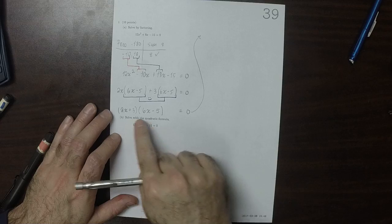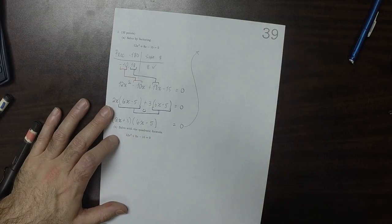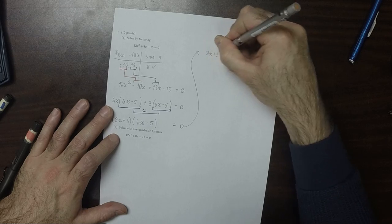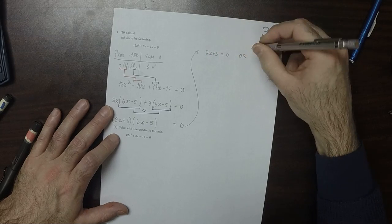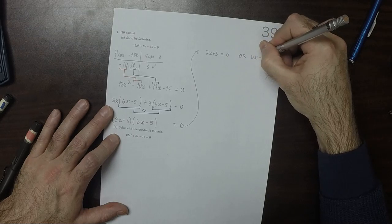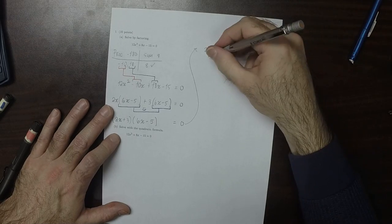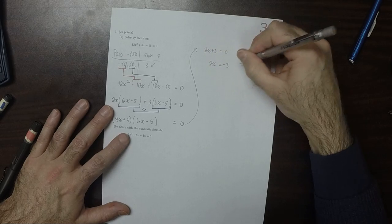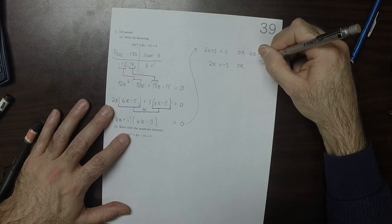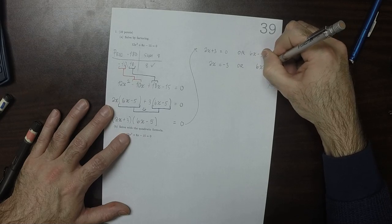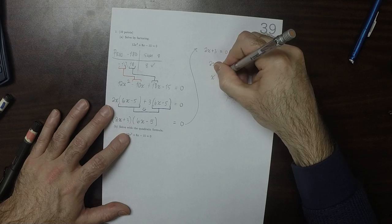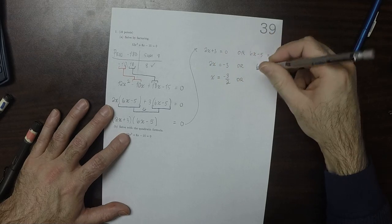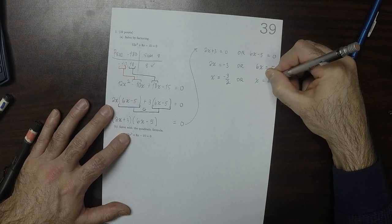So we have the product of these two is 0. So the equation splits into two possibilities, either 2x plus 3 is 0, or 6x minus 5 is 0. So 2x is negative 3, so x is negative 3 halves, or x is 5 over 6.